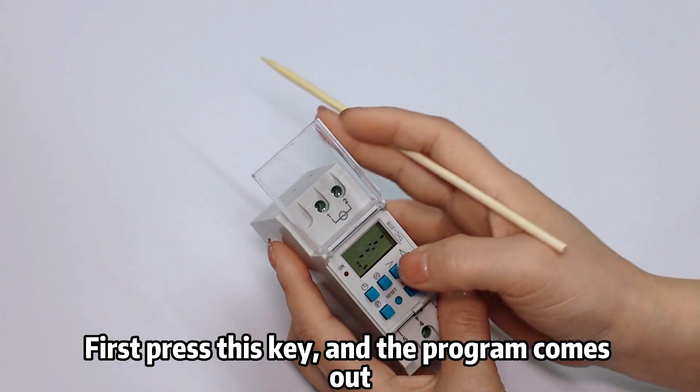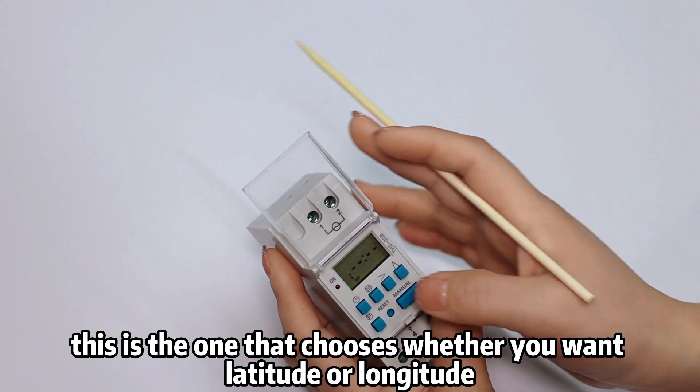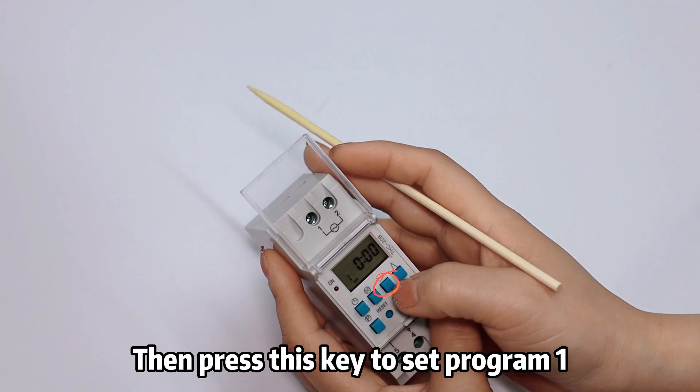After you set it up, set up the program. When you set up the program, first press this key and the program comes out. After the program comes out, this is the one that chooses whether you want latitude or longitude. Then press this key to set program one.